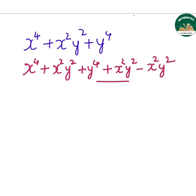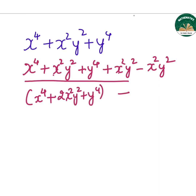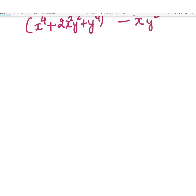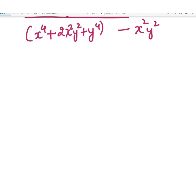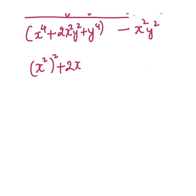Now I will make this as one pair, that will become x to the power of 4 plus 2 times x squared y squared plus y to the power of 4, minus x squared y squared. Now we will rearrange them. After rearranging, what we get? We can write this as x squared whole square plus 2x squared y squared plus y squared whole square, minus xy whole square.